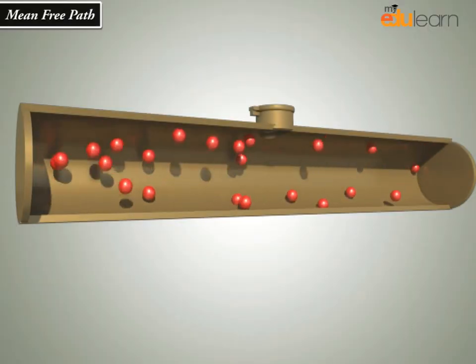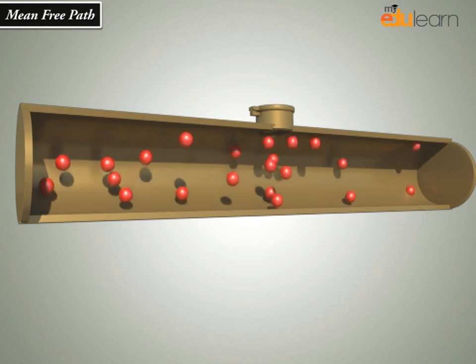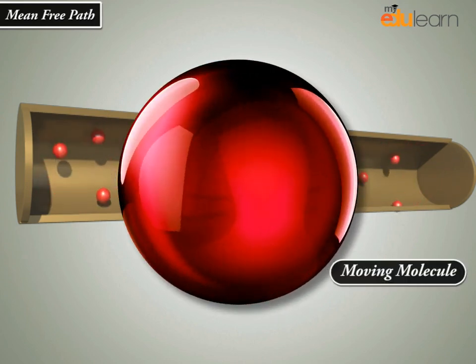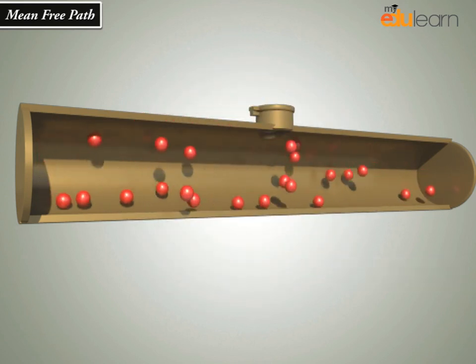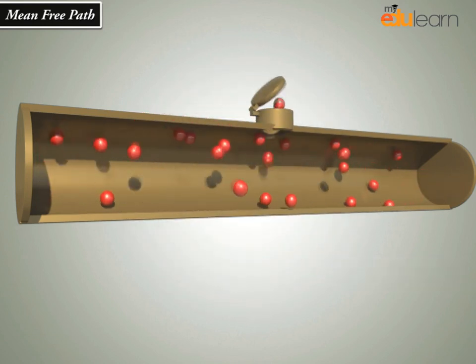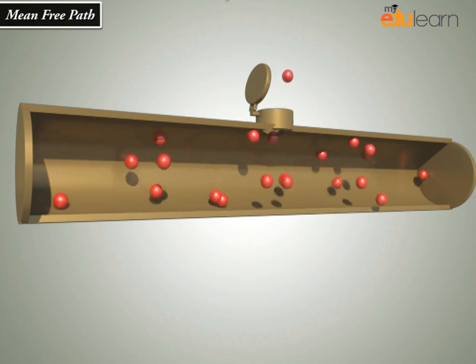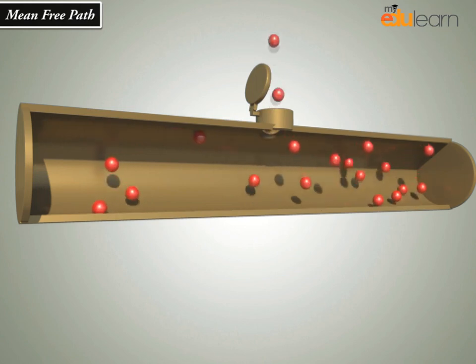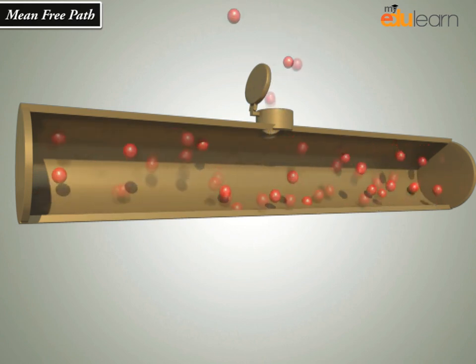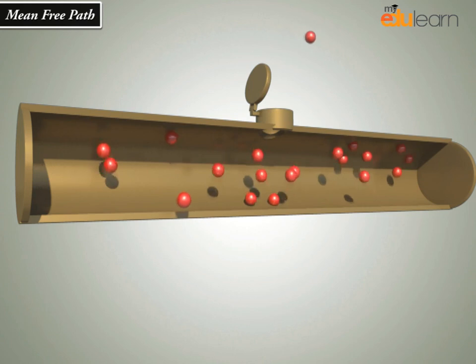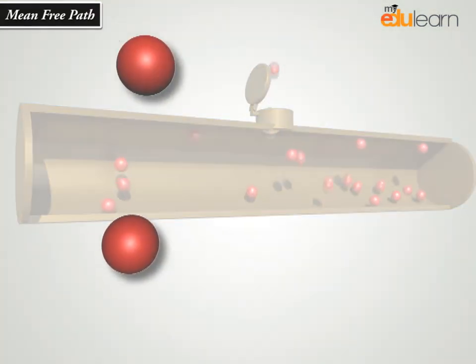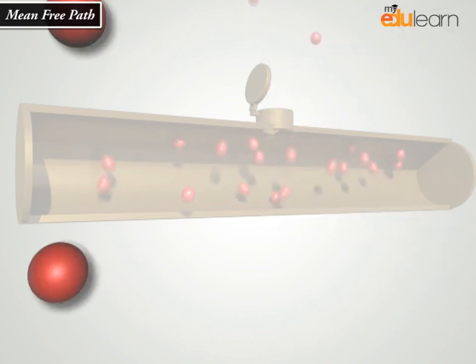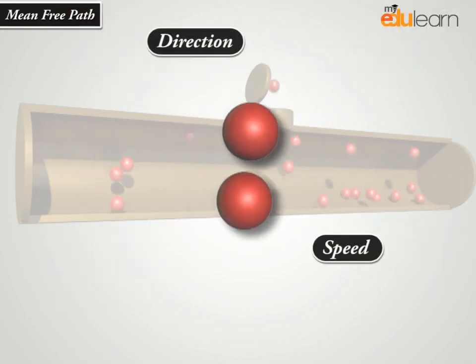The mean free path is the average distance traveled by a moving molecule between collisions. Imagine gas leaking out of a pipe. It would take a while for the gas to diffuse and spread into the environment. This is because gas molecules collide with each other, causing them to change in speed and direction.